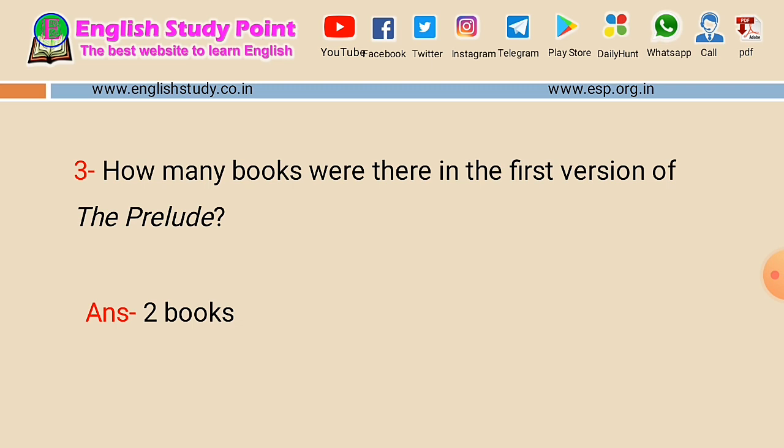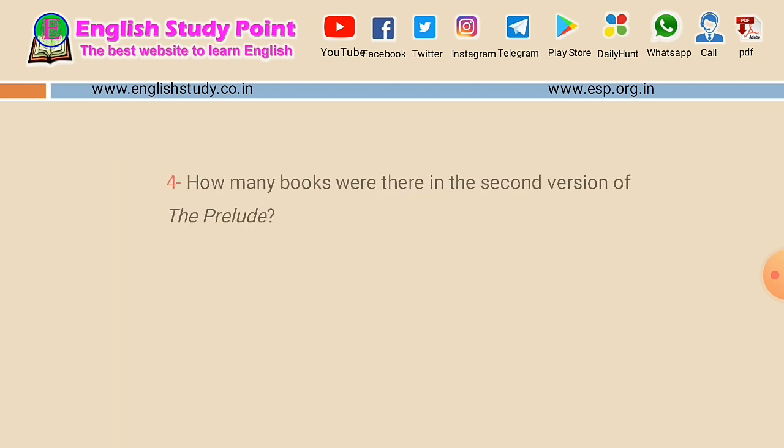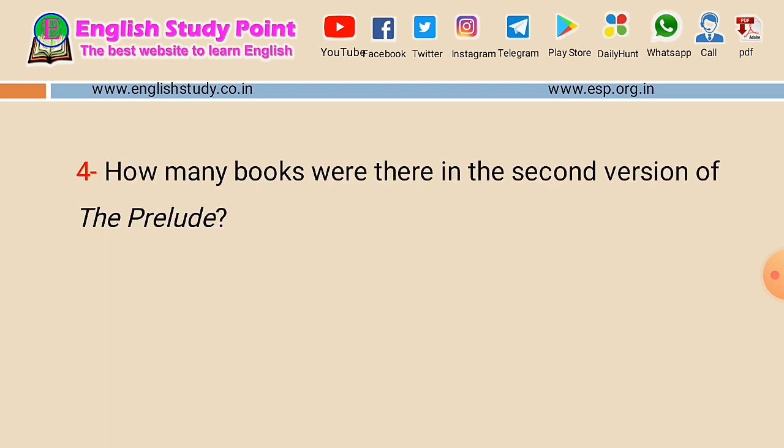Question number four: how many books were there in the second version of the Prelude? The answer is 13 books. There were 13 books in the second version of the Prelude.